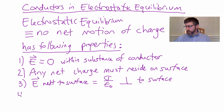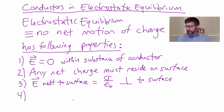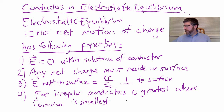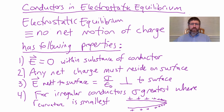Finally, property four: for irregular conductors of non-uniform shape, the sigma — the surface charge density — must be greatest where the radius of curvature is smallest. That is, for example, like on a pin head. The surface charge density gets much greater where you have a sharp point. We already showed this last chapter, and we'll prove it again next chapter.